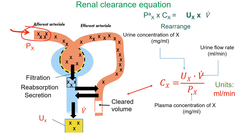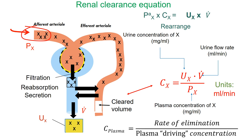Pay special attention to the units. Clearance is not an amount, so the units will be a rate — namely milliliters per minute. I also wish to point out the similarity between the equation for renal clearance found in all textbooks and the definition of plasma clearance in general as used in pharmacokinetics. They are very similar.